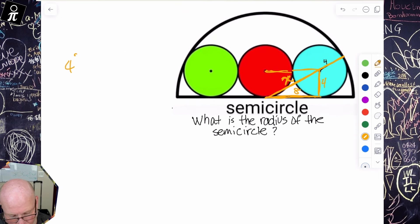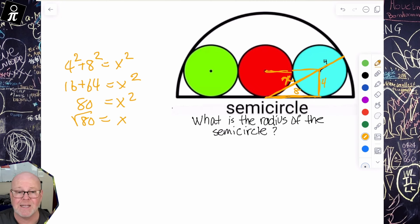So we've got four squared plus eight squared is equal to X squared. So we've got 16 plus 64 is X squared. We've got 80 equals X squared. So X equals square root of 80. I know that could be simplified, but I'm just going to leave it like that for right now.